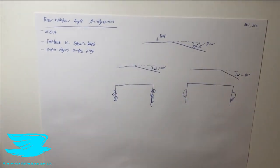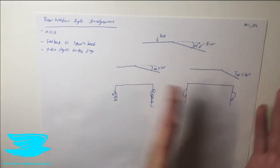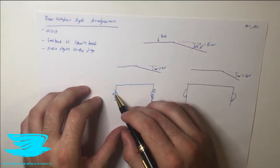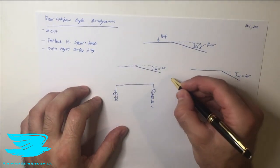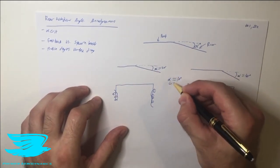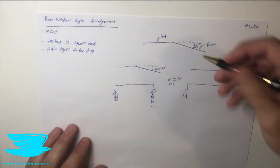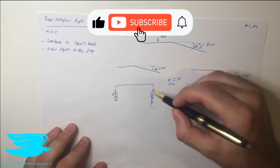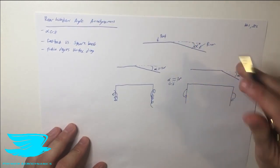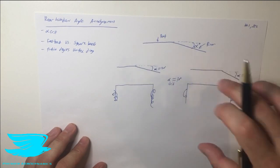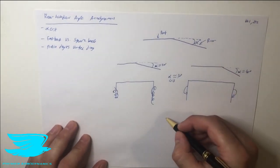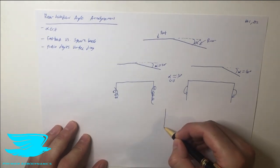What happens between these two angles is that the vortices that form on the fastback — called longitudinal vortices — pop. This often happens at around 30 degrees, which is alpha critical. At that angle these vortices pop and we transition to the other setup, where vortices rotate in the opposite sign and are significantly weaker.